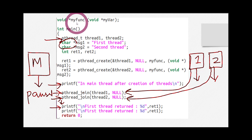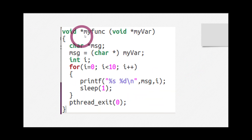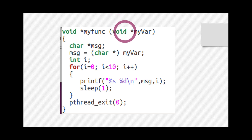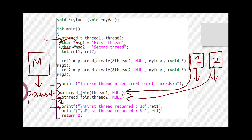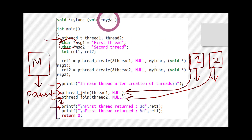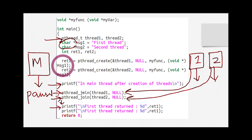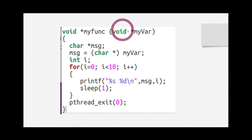Now let's look at the function definition. The function is named myFUNC, with return type void pointer and parameter type void pointer. Remember, we passed message_one to pthread_create, and message_one's data type is char pointer. Since the function receives a void pointer, we need to convert it back to its original type. So I declared a char pointer variable and type casted the void pointer parameter back to char pointer, saving it in a variable called message.